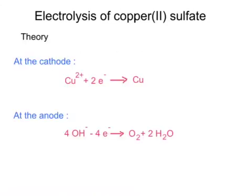During the electrolysis of copper sulfate, copper is deposited at the cathode because copper ions gain two electrons to become copper atoms. At the anode it depends on whether you are using inert or copper electrodes. In the experiment shown using copper electrodes, copper would have dissolved off the anode and into solution. If you had used inert carbon electrodes, the anode reaction would be that hydroxide ions from the water would convert into oxygen gas and water.